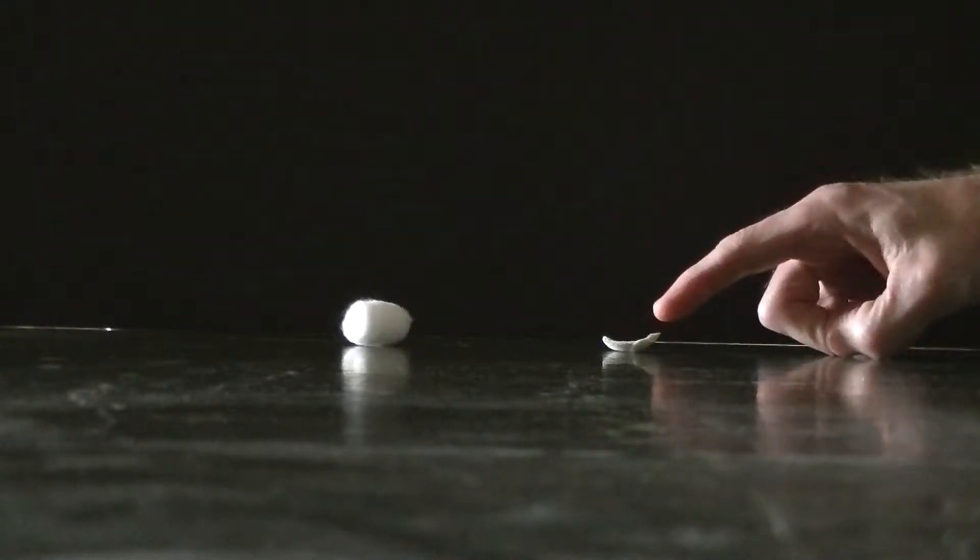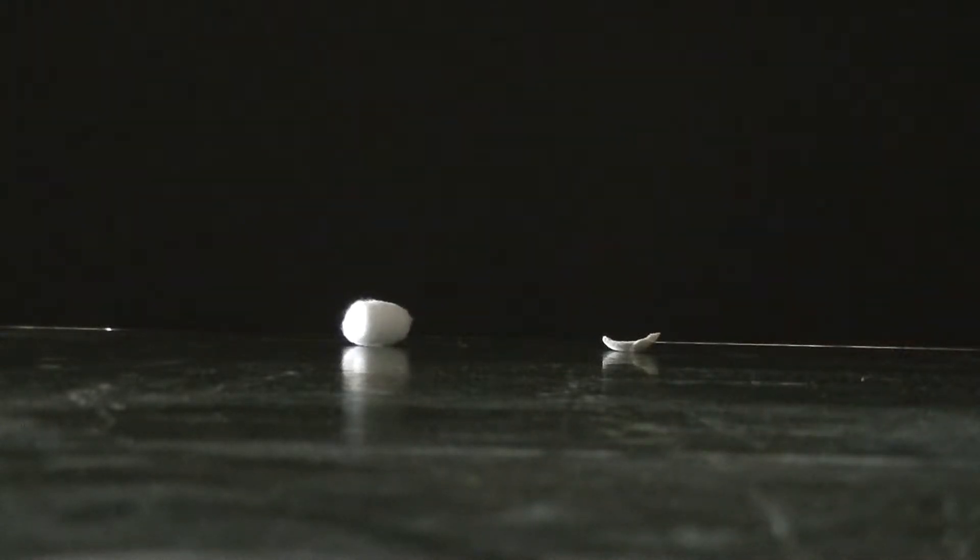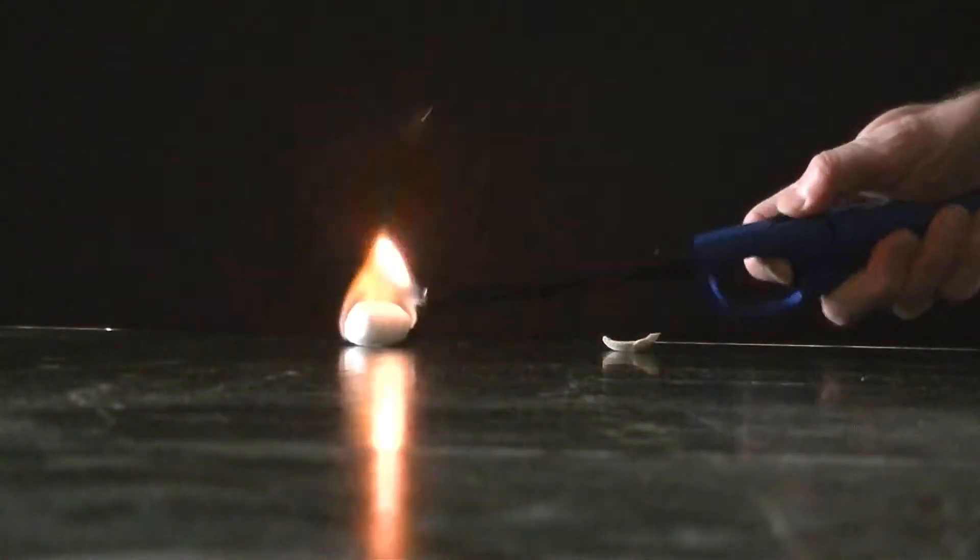Over here's a piece of cotton. Here's a piece of cotton that's been chemically treated. We're going to observe the burning characteristics of both of these.